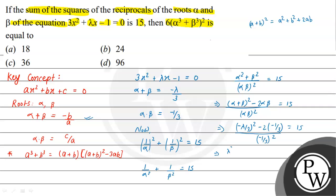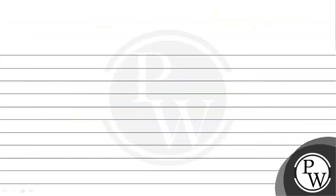Multiplying through: λ²/9 + 2/3 = 15/9 = 15 × (1/9). So λ²/9 = 15/9 - 2/3 = 15/9 - 6/9 = 9/9 = 1. Therefore λ² = 1.